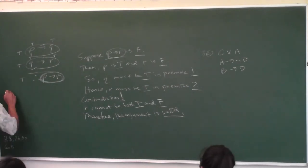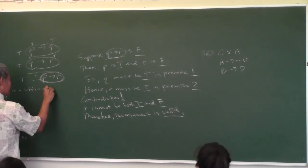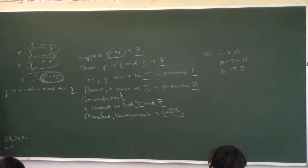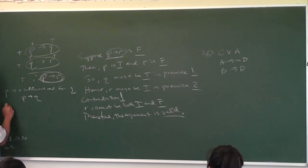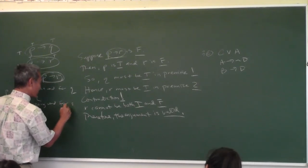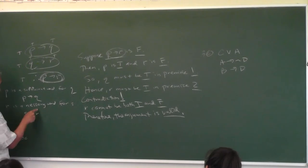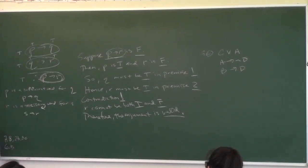Here's what I teach my math team: if P is a sufficient condition for Q, how do we remember this is P implies Q? Because the F's point that way — P to Q. If R is a necessary condition for S, how do we know that means S implies R? The Y in 'necessary' — look at the Y, it points from S to R. That's how we remember it on the math team.